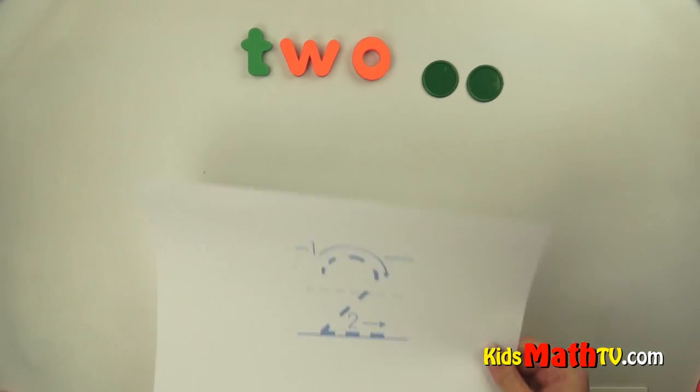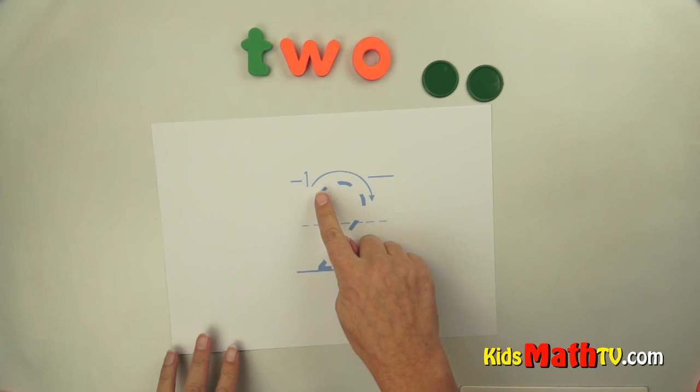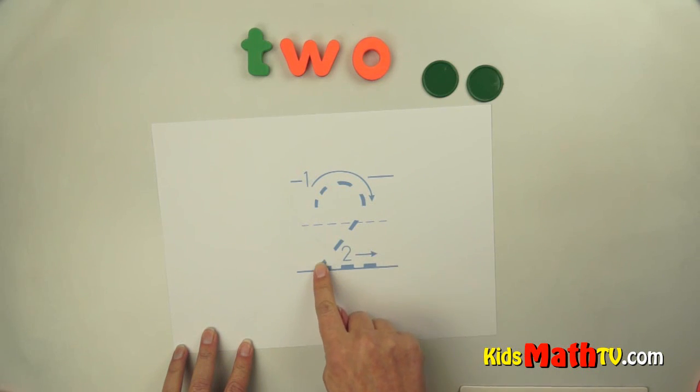So to write the number two, first we start off up here and we go up and around, down to the line, and then straight across.